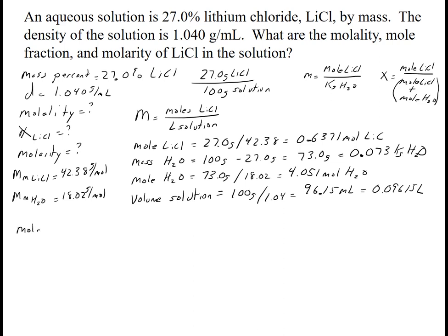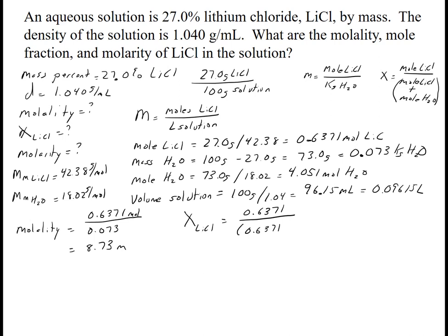Now I have all the pieces, so I'll write them out. Molality is 0.6371 moles of LiCl over 0.073 kilograms of water, which gives 8.73 m (small m). The mole fraction of LiCl is 0.6371 divided by the sum of 0.6371 plus 4.051, which gives 0.136 — no units for that one.